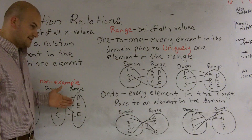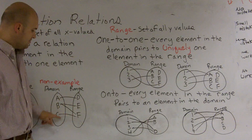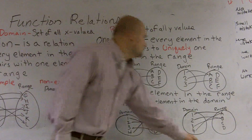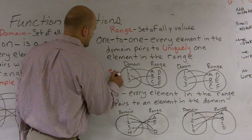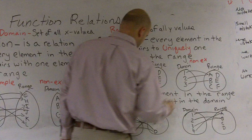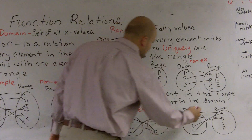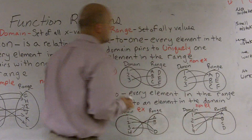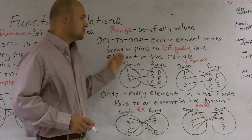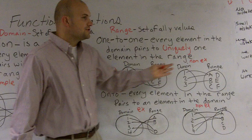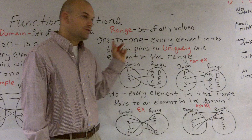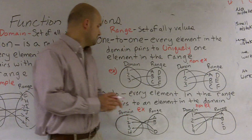This would not be one-to-one because b and c both go to f. Here's my example and here's my non-example. Every element of the domain has to uniquely go to an element in the range. In the non-example, one and two both go to a, so therefore this is not a one-to-one function.